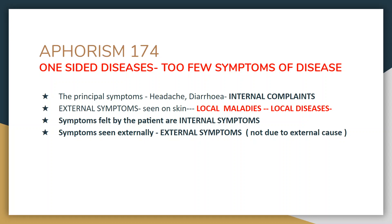In subsequent aphorisms, Dr. Hahnemann gives detailed instructions to the physician on how to treat these local maladies or local diseases. Here, Dr. Hahnemann gives us the idea that one-sided diseases are of two varieties — internal and external. For the external variety, be sure that the external symptom seen on the skin is not due to any external cause: no external injury, no external contact with any surface.